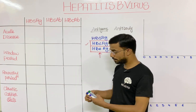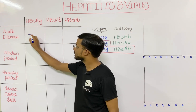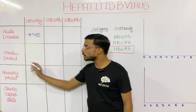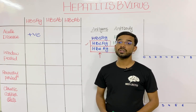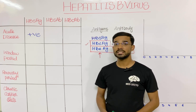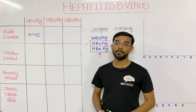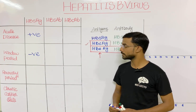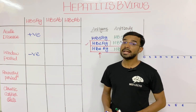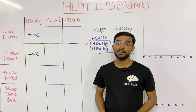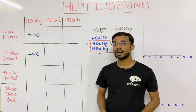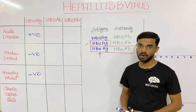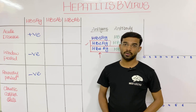In acute hepatitis, you will see a positive Hepatitis B surface antigen. In the window period, there is no detectable antigen in the serum, so surface antigen will be negative. In the recovery period, there is no Hepatitis B virus and therefore no Hepatitis B surface antigen — so surface antigen is also negative in recovery.